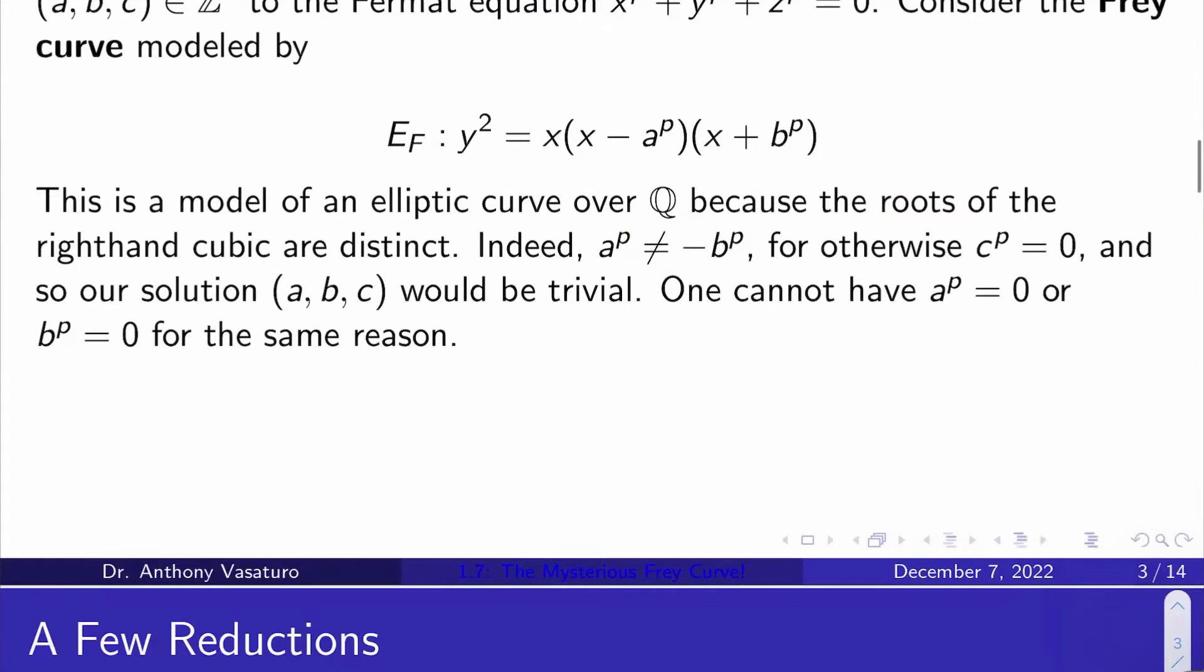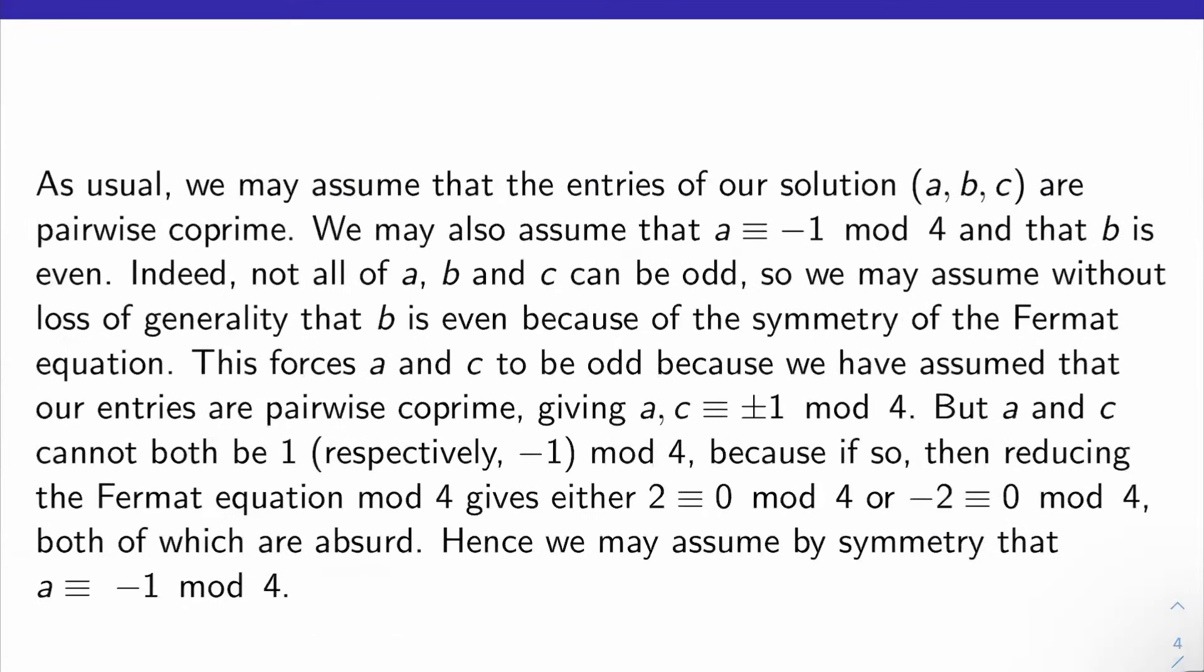So who cares? First of all, let's make some reductions. As usual, we can assume the entries of our solution are pairwise co-prime. We talked about that when proving exponents 3 and 4.